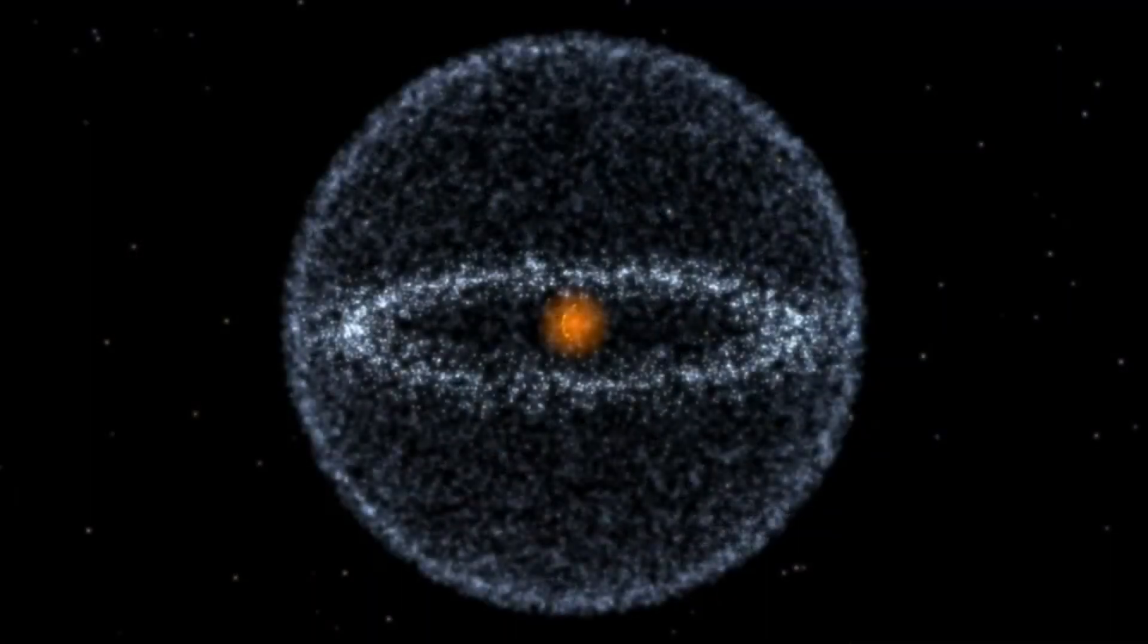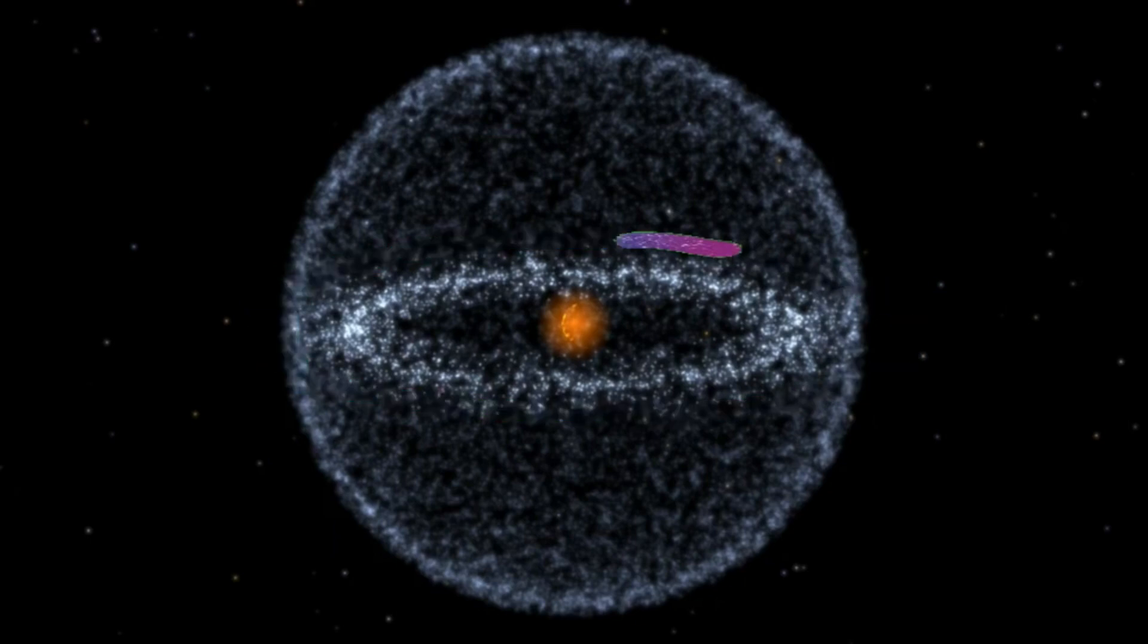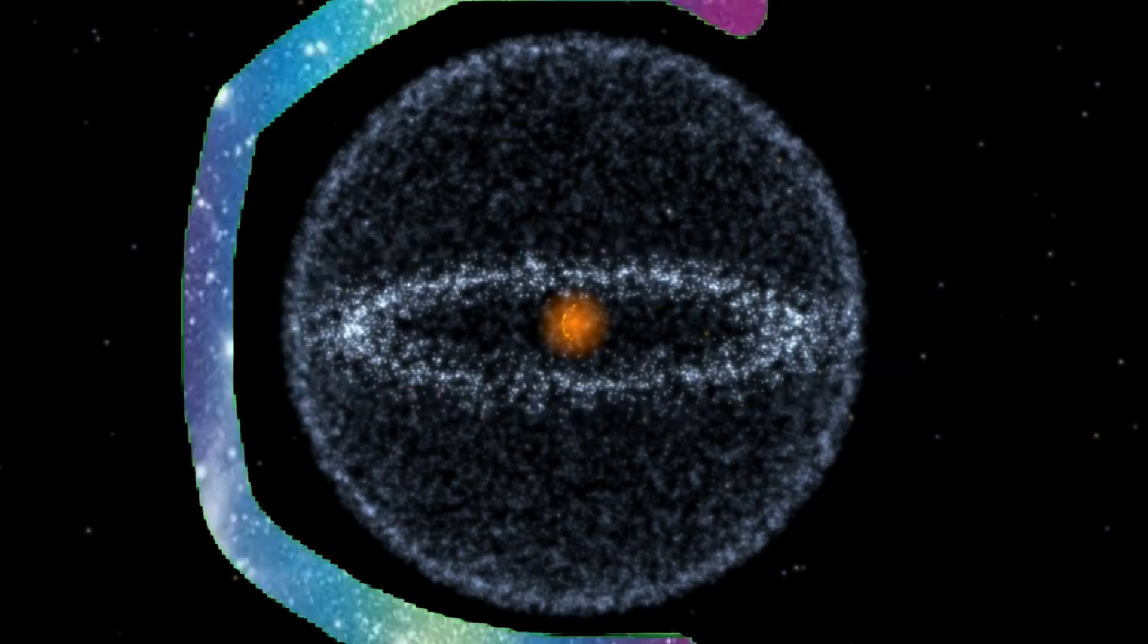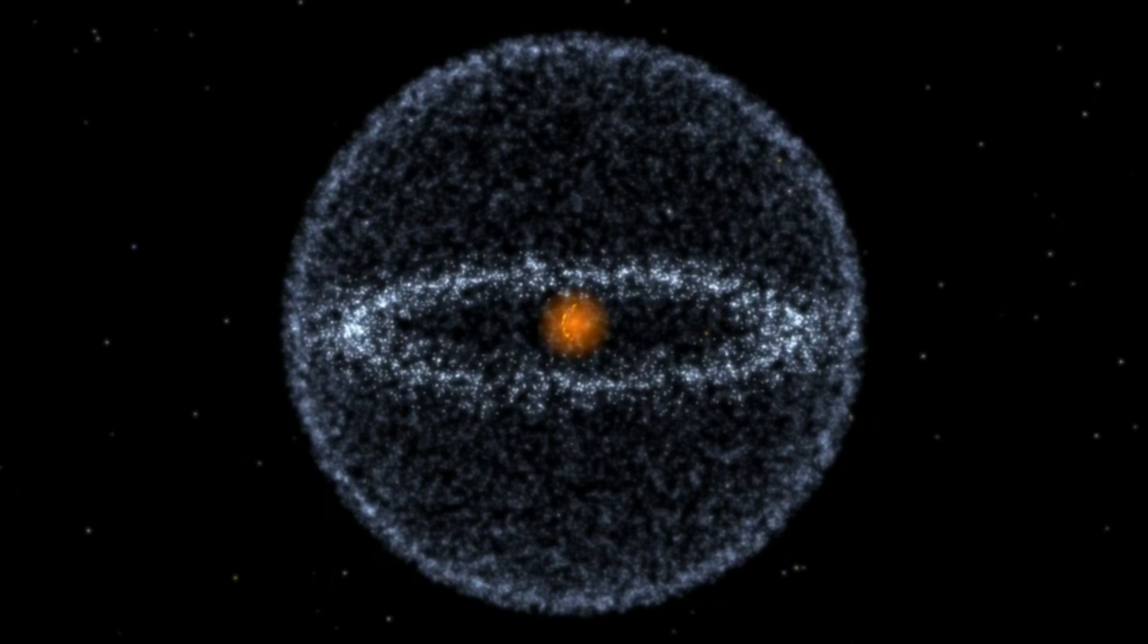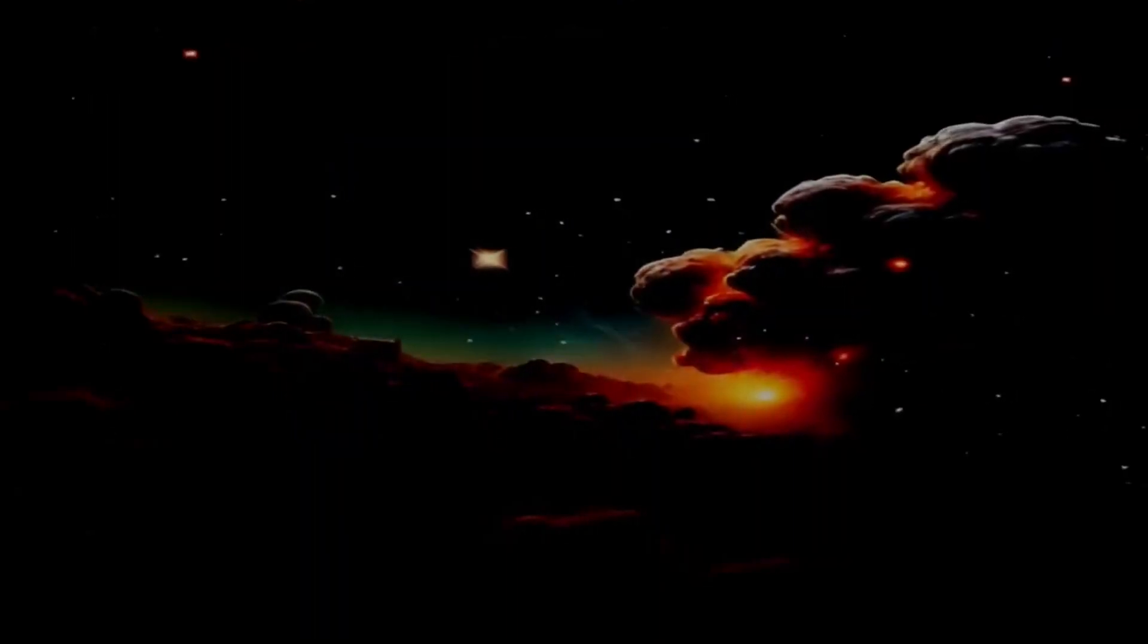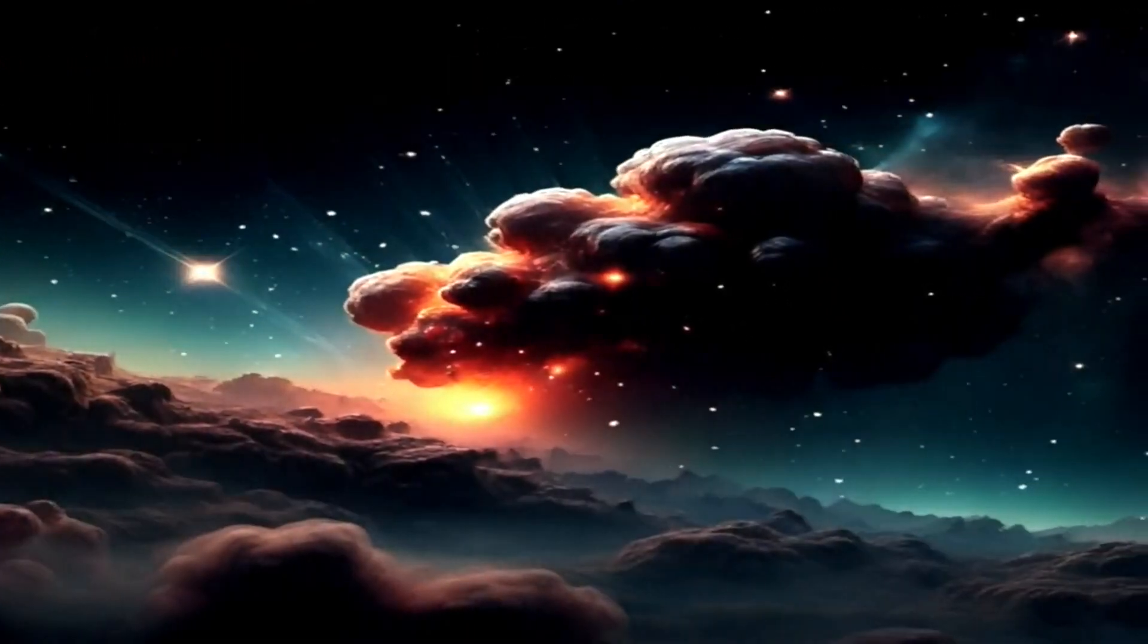The cloud itself is thought to comprise two regions: a disk-shaped inner Oort cloud, aligned with the solar ecliptic, and a spherical outer Oort cloud, enclosing the entire solar system. Technically, as both regions lie well beyond the heliosphere, they are actually in interstellar space.